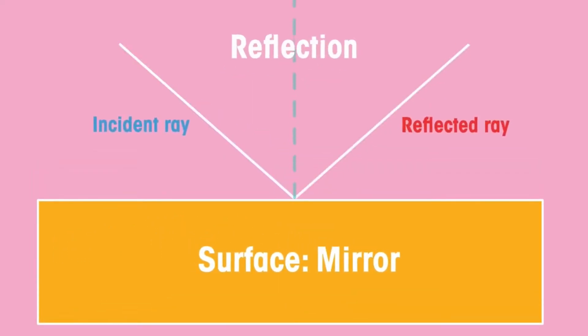Reflection is when light bounces off an object. The angle of incidence is equal to the angle of reflection.